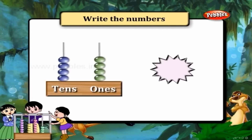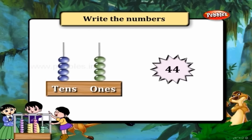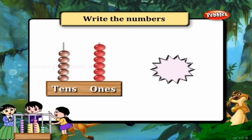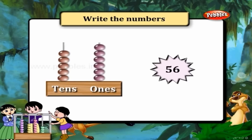4 ones and 4 tens — that is 44. 6 ones and 5 tens — that is 56.